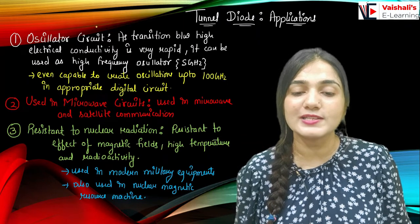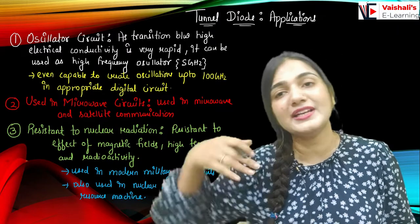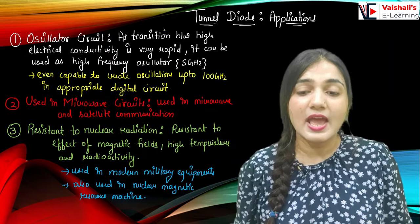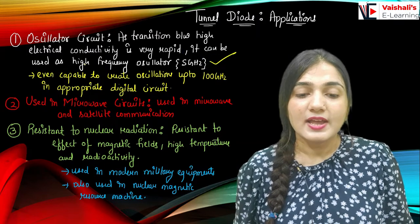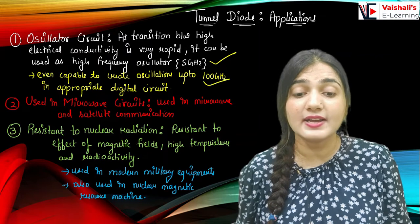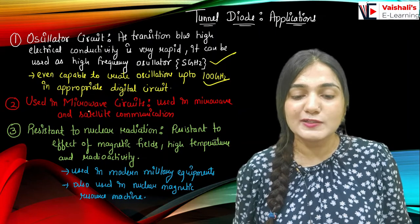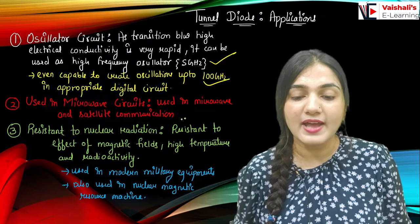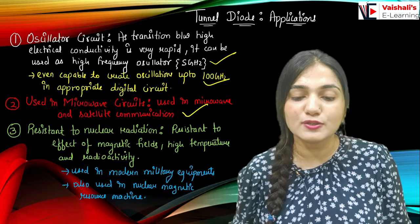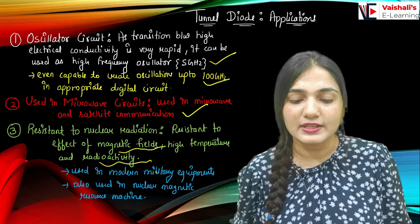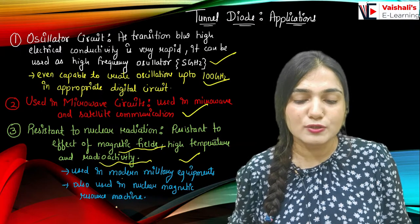Coming to the applications of the tunnel diode. First, it acts as an oscillator circuit. As the transition between high and low electric conductivity is very rapid — transitioning due to the negative resistance region — it can be used as a high frequency oscillator at a 5 GHz range, and is even capable of creating oscillations up to 100 GHz in appropriate digital circuits. It can be used in microwave circuits and satellite communication purposes. It is also resistant to nuclear radiation, the effects of magnetic fields, high temperature, and radioactivity — so it can be used in modern military equipment and in nuclear magnetic resonance machines as well.